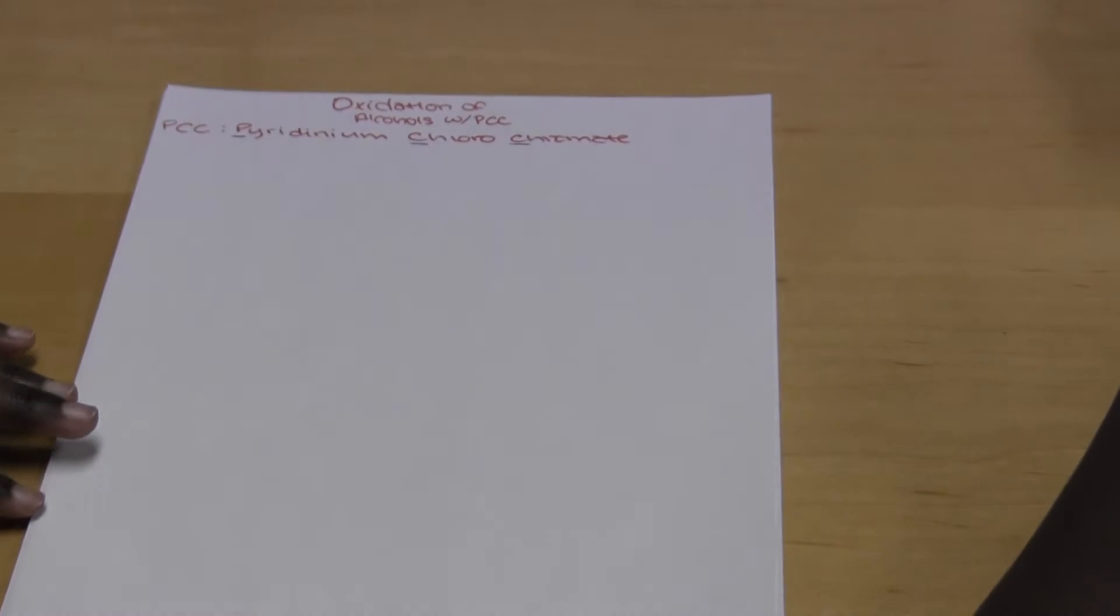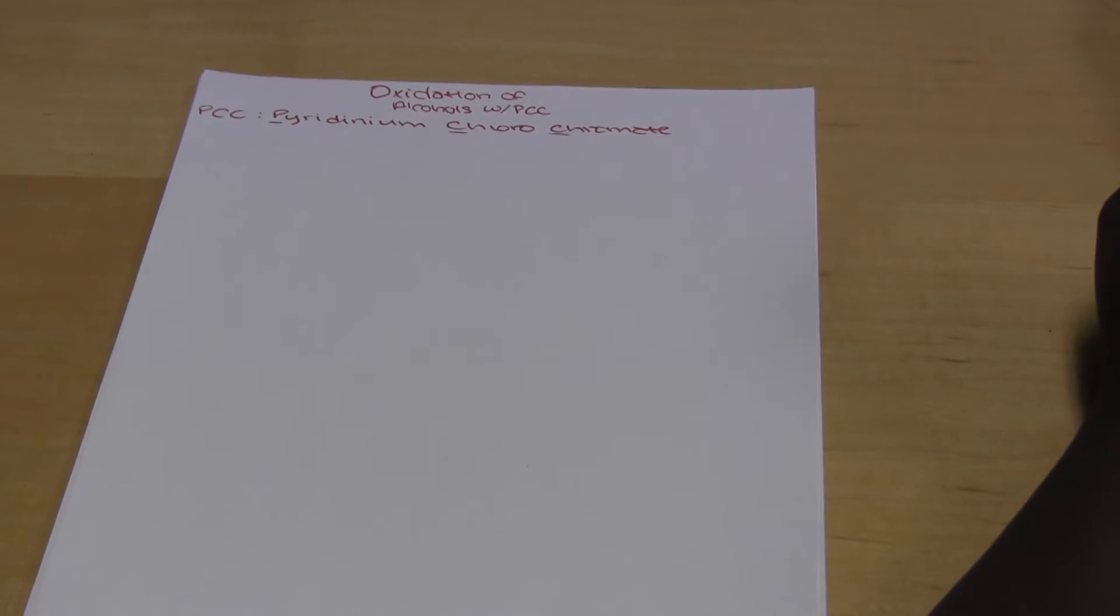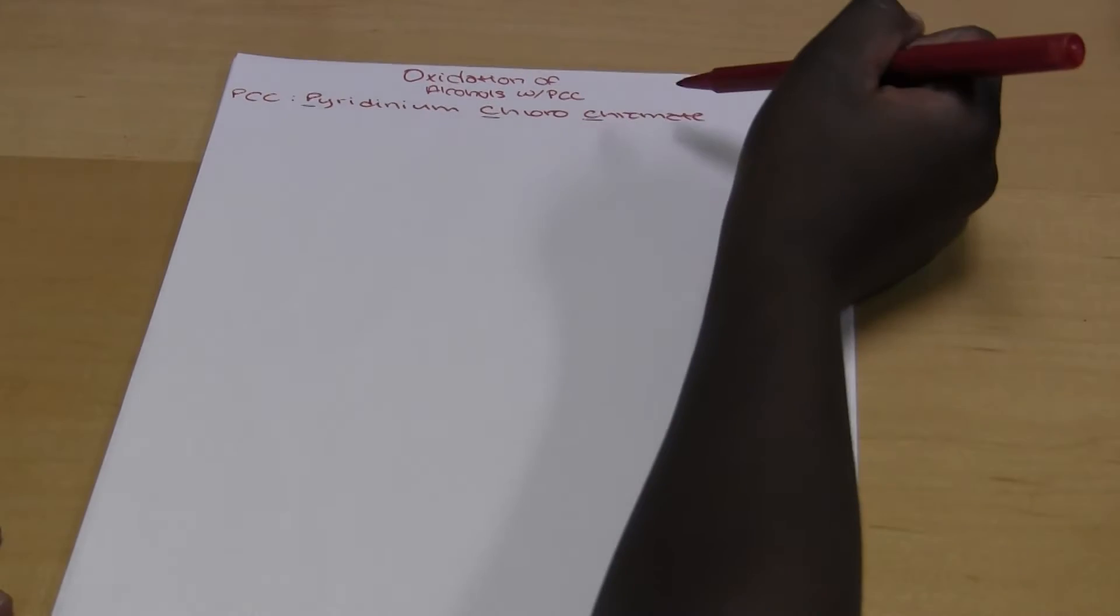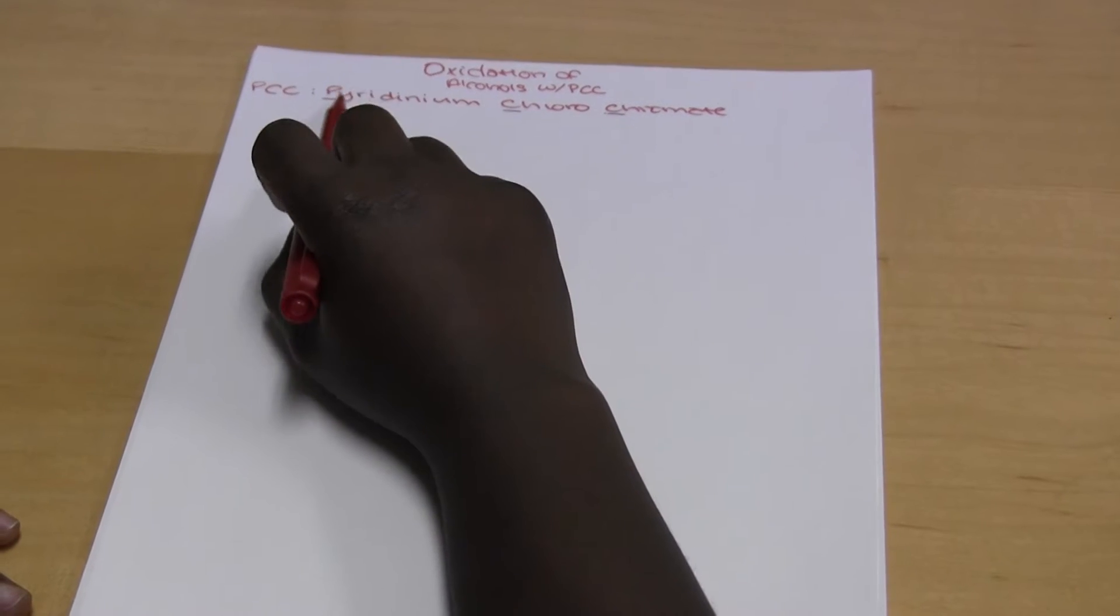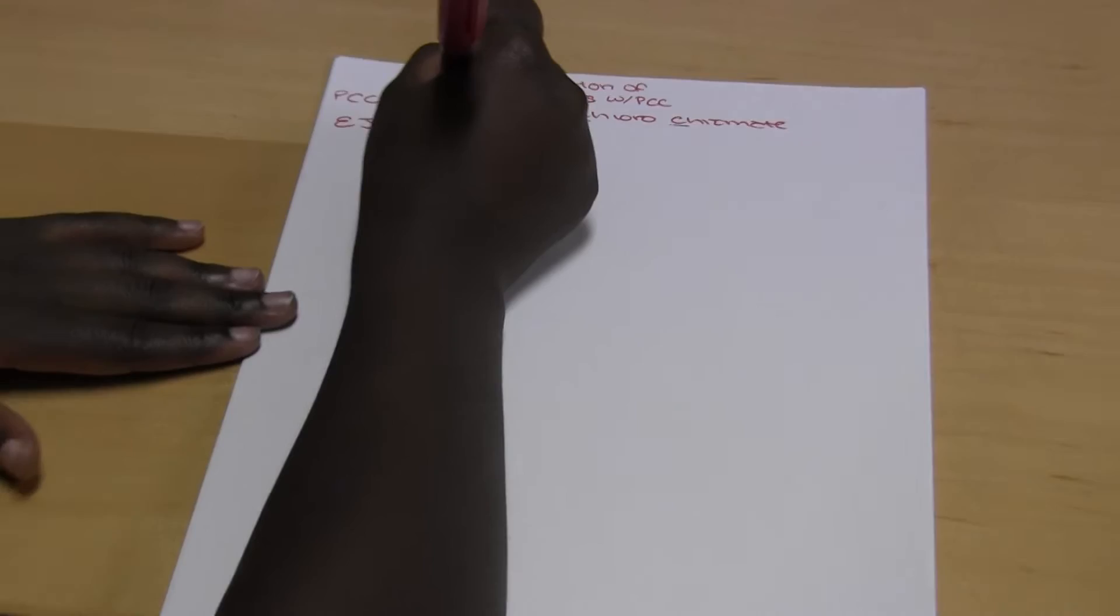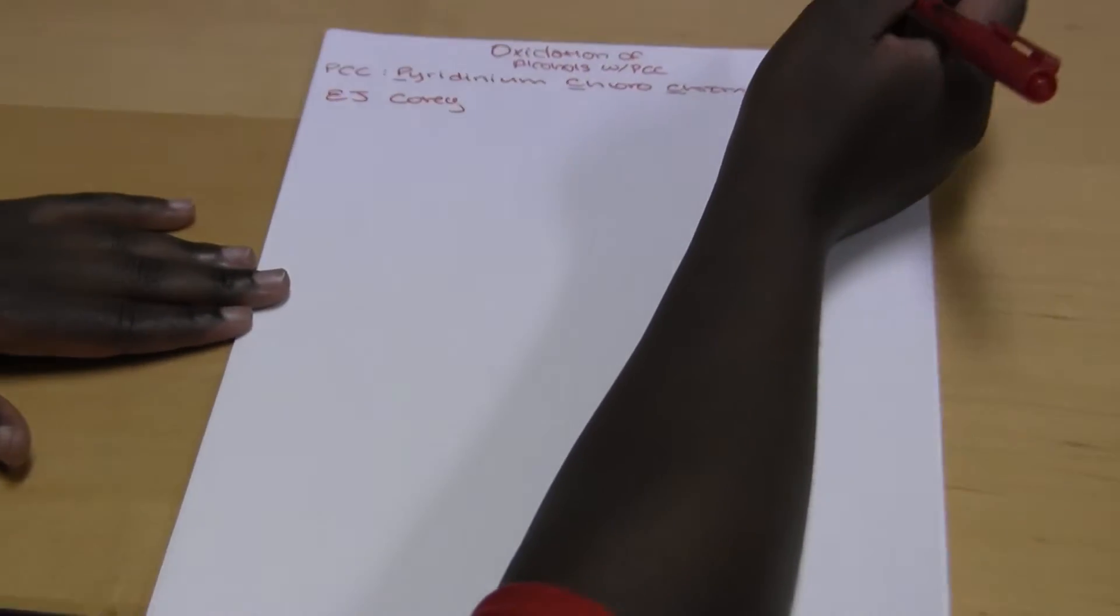Okay, this video will be about the oxidation of alcohols with PCC. PCC stands for pyridinium chlorochromate, and that's where you get the PCC. This was invented by E.J. Corey as an alternative to the Gems reagent.